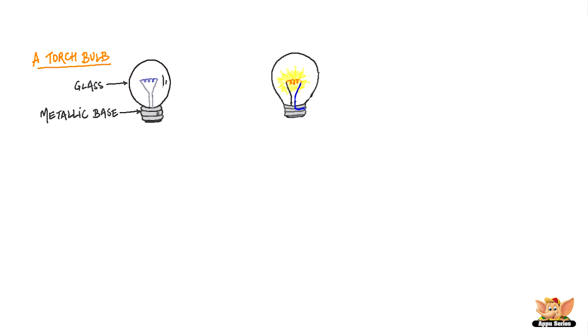Have you seen what's inside the bulb? If you have a closer look inside the bulb, you will find a thin wire fixed in the middle of the glass bulb that lights up and makes the bulb glow. This thin wire that lights up is called the filament of the bulb.